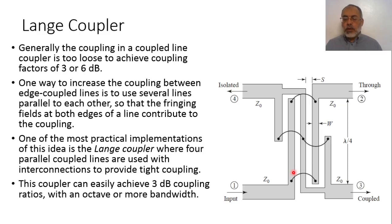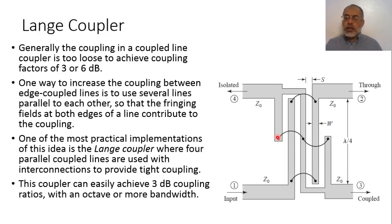The main disadvantage of the coupled line directional coupler is that it is mainly suitable for weakly coupling coefficients. To increase the coupling coefficient, instead of using a single coupled section, we can use multiple parallel coupled sections such that each coupled section will introduce a part of the coupling coefficient. So the total coupling coefficient in this case will be larger than the conventional coupled line directional coupler.